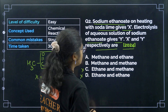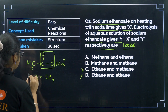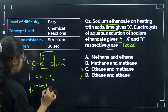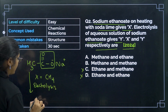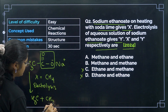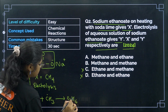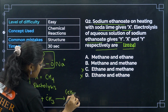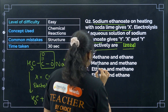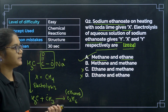For electrolysis of aqueous sodium ethanoid, we get CH₃ radicals. Two CH₃ radicals combine to give C₂H₆ — ethane. So Y = ethane. Therefore X and Y are methane and ethane respectively, and option number A will be the correct answer.